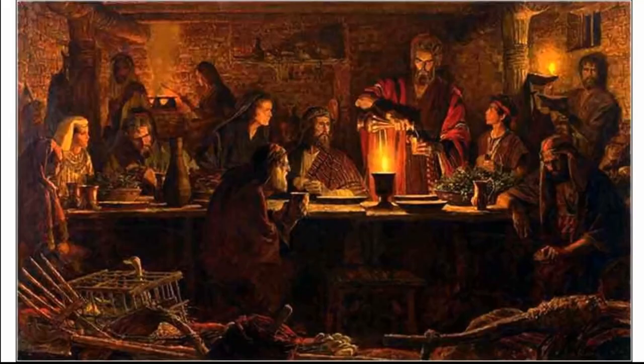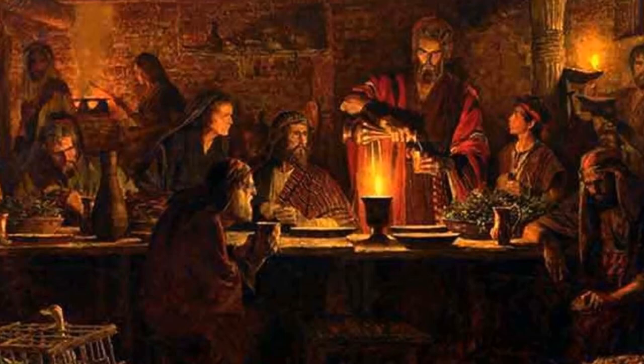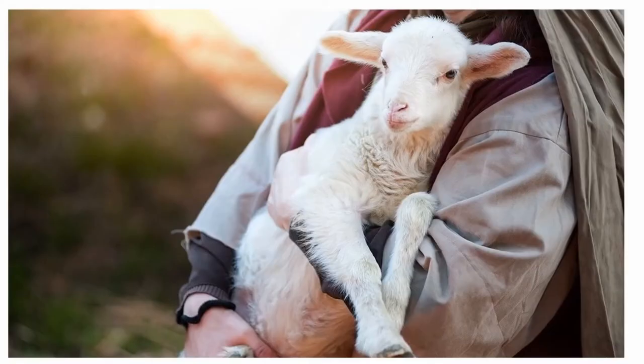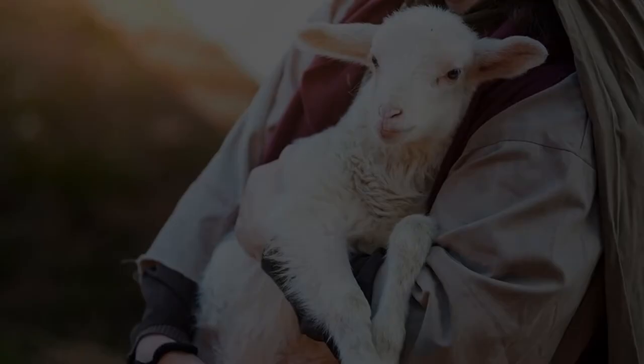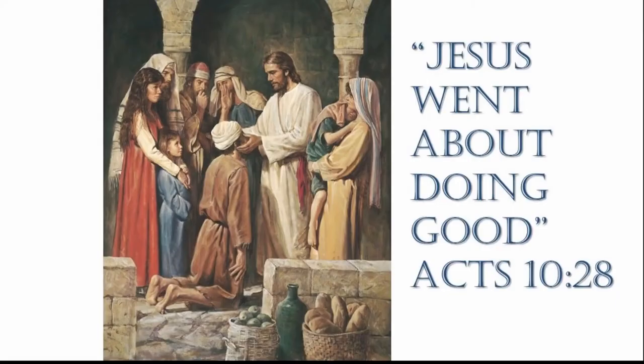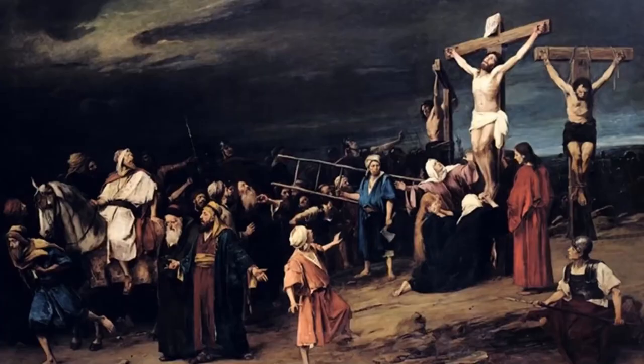With the Passover feast, the children of Israel were to commemorate their deliverance year after year. But they were not to simply go to the meat market and buy a carcass. They were instructed to choose a perfect lamb, the most lovable of all animals, keep it in their home for four days, and then slaughter it themselves. This symbolized Jesus who came to earth and lived among us, going about doing good and revealing God's great love, but in spite of this, he was killed by those he came to save.